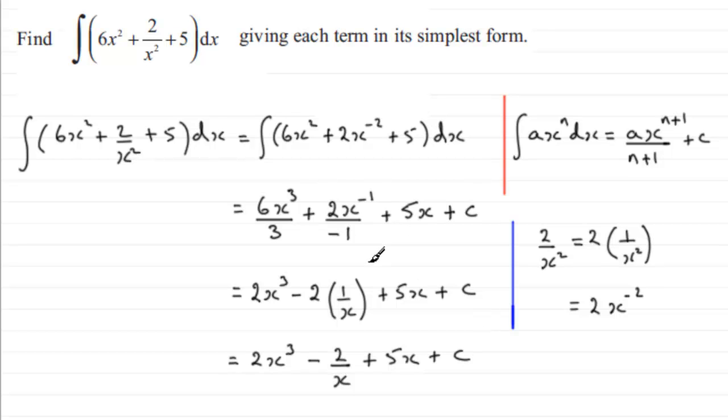Now for this particular question, they were quite happy if you didn't do these steps - if you wrote minus 2x to the power minus 1, they were quite happy with that. So you could get away with 2x cubed minus 2x to the power minus 1 plus 5x plus C, but personally, if I had to give each term in its simplest form, that's what I would prefer.